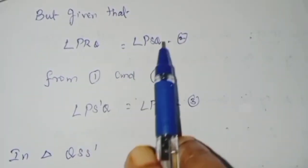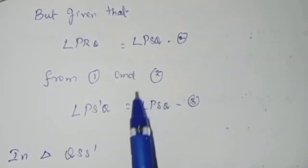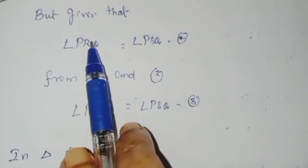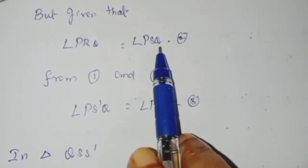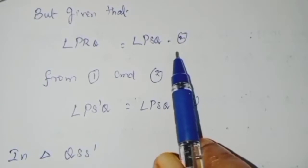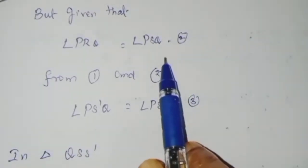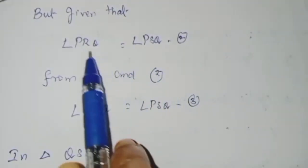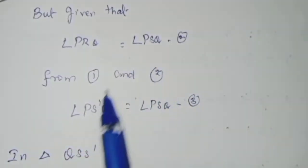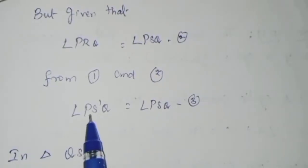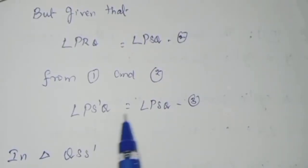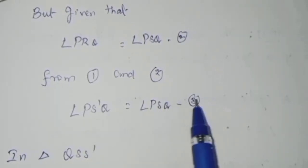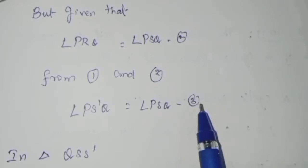Now combining equations 1 and 2: the left-hand side is angle PRQ, and the right-hand sides are angle PS'Q and angle PSQ. So angle PS'Q is equal to angle PSQ. This is the third equation.